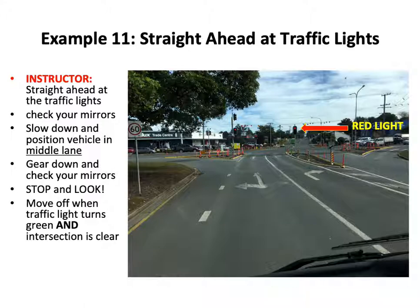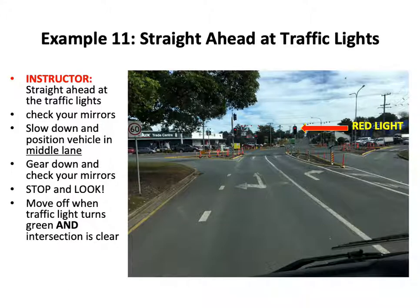Example eleven: straight ahead at traffic lights. There's a red light ahead. Straight ahead at the traffic lights, please. Check your mirrors, slow down and position the vehicle in the middle lane. It's very important that drivers look at the painted arrows on the road to make sure they're in a lane that can go in the direction they want to go. Gear down and check your mirrors. Stop at the red light and look. Keep monitoring the intersection, move off when the traffic light turns green and the intersection is clear.